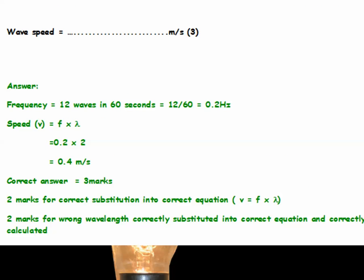So let's start out by writing down the wave equation. Speed is frequency times wavelength. V equals F times lambda. Now the frequency here, you've got to do a little calculation to work out the frequency. It's 12 waves in 60 seconds, that's all you're told. So, 12 divided by 60, that's 0.2 Hz. So, substitute the correct figures into the equation. Frequency is 0.2 times wavelength, which is 2. 0.2 times 2 is 0.4 metres per second.